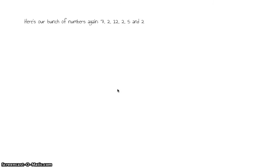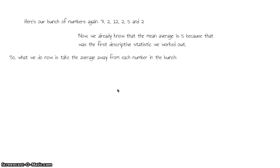So here's our bunch of numbers again. We're going to calculate the variance from this. First thing, we already know the average is 5, because we worked it out. Then take the average away from each number in the bunch. So the average was 5, the first item in the bunch was 7, so 7 take away 5 comes out as 2. Next item was a 2, 2 take away 5 is minus 3, 12 take away 5 is 7, 2 take away 5 is minus 3, 5 take away 5 is 0, and there's the minus 3 again.